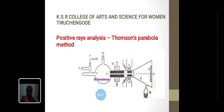Positive rays analysis: This method is also known as Thomson parabola method. In this diagram, Thomson determined the charge to mass ratio of positive ions by using this apparatus. It consists of a discharge tube in which the pressure of the gas is about 10 to the power minus 5 meter of mercury.